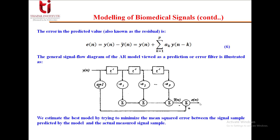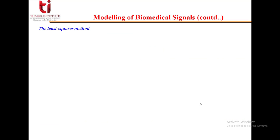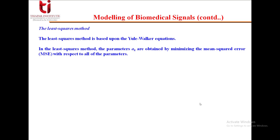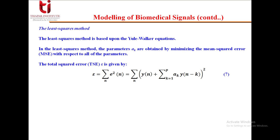We estimate the best model by trying to minimize the mean square error between the signal sample predicted by the model and the actual measured signal sample. We use the least squares method, based upon the Yule-Walker equations. The parameters a_k are obtained by minimizing the mean squared error (MSE). The total squared error is ε = ∑_n e²(n) = ∑_n [y(n) + ∑(k=1 to p) a_k · y(n-k)]².